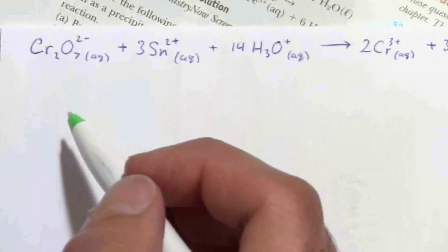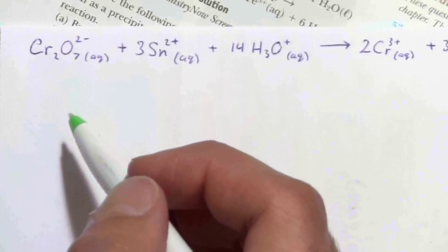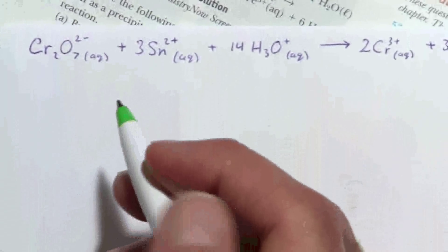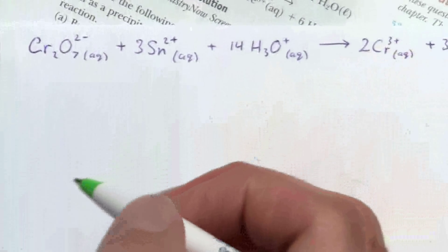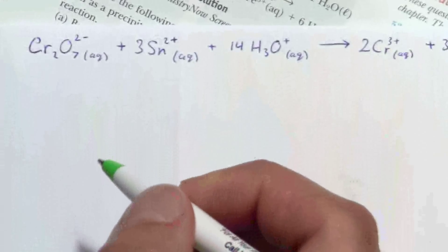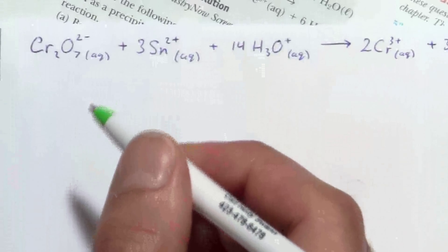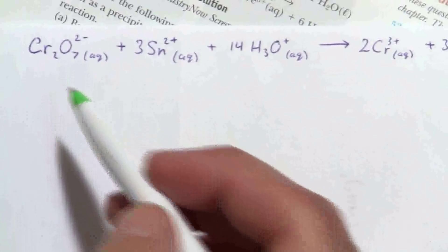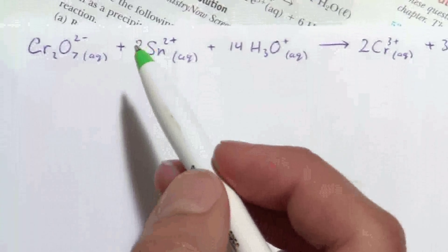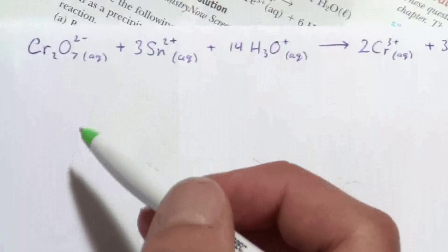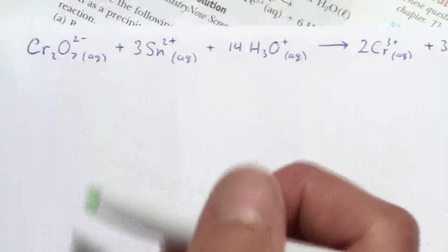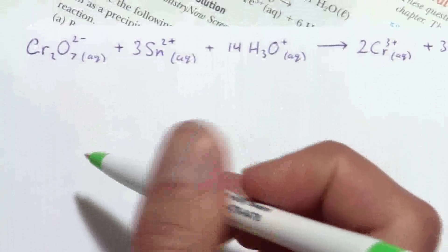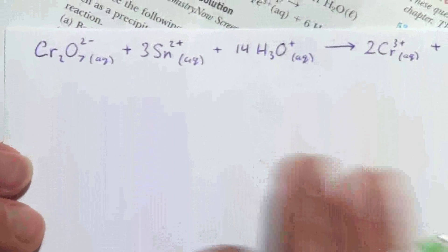If you look at it in terms of the oxidation number, it might make a little bit more sense. If you lose electrons, your charge is increasing. If you look at the oxidation number, the higher the oxidation number, the more it's oxidized; when it lowers, it's reduced. So it's more straightforward, perhaps, that way.